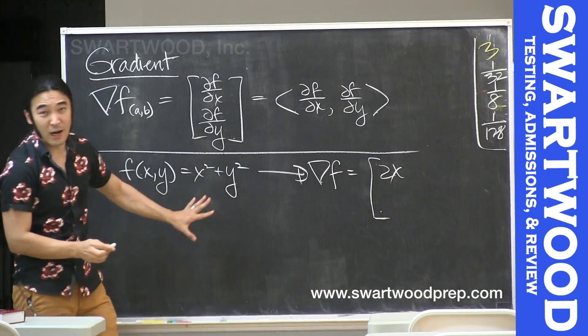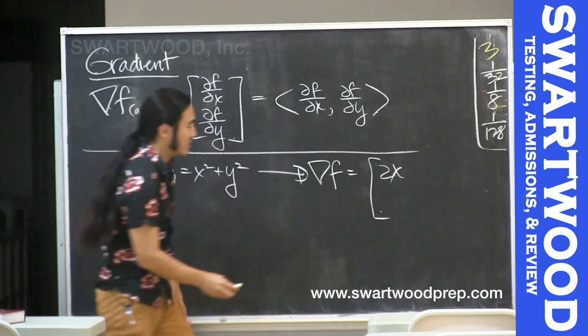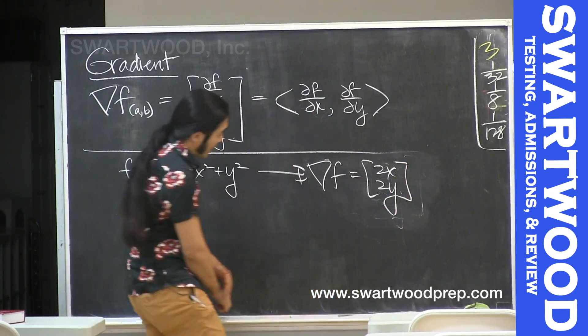And the partial of this guy with respect to y, the whole thing, so this is going to be 2y. And I think that's it.